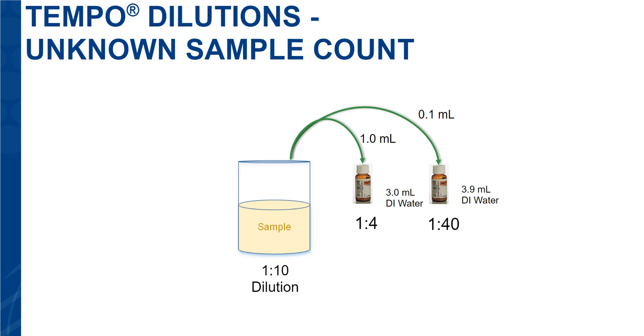Or, you can test a 1 to 40 and get a count range of 100 CFU to 490,000 CFU. This will give you a heads-up about the count in your product. And in the future, you will ideally just run the dilution range that gives you a count in the middle of the range.